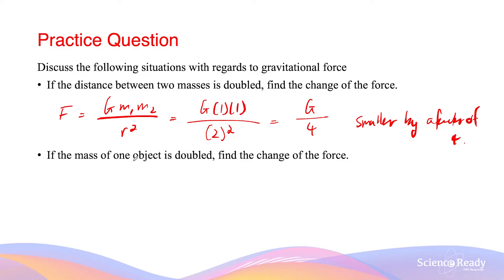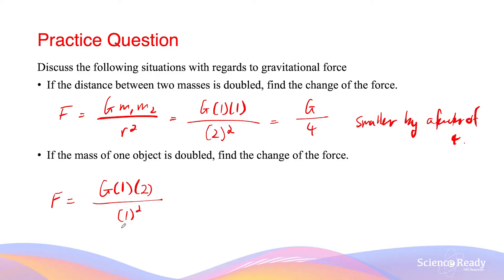If the mass of one object is doubled, find the change in force. We can write 1 for one of the masses and 2 for the other mass, divided by 1 squared because the distance is unchanged. This gives 2G, which tells us the force is doubled in magnitude as well.